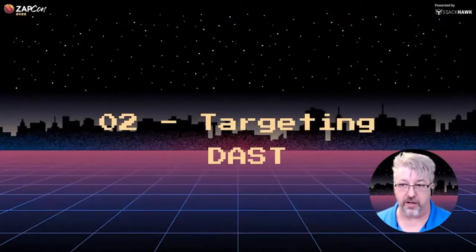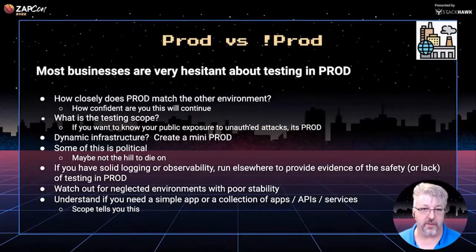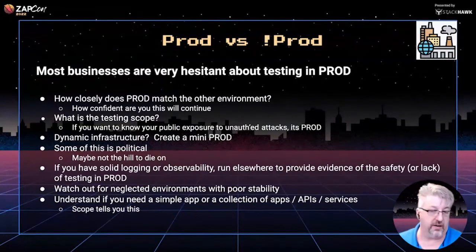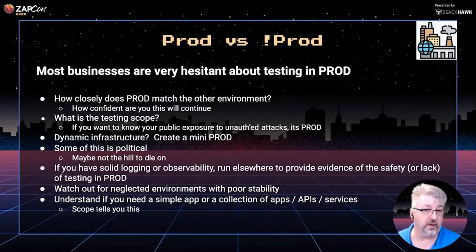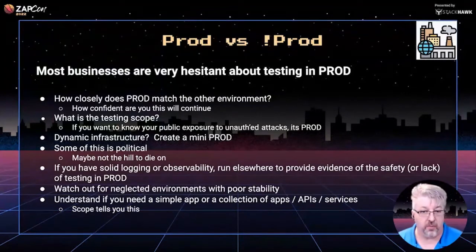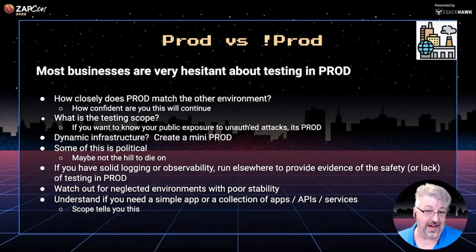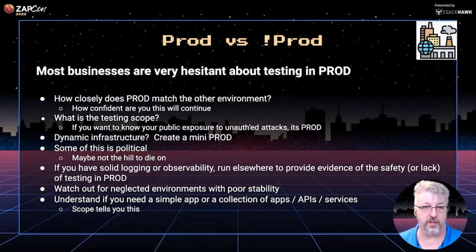Let's talk about targeting DAST. This is the traditional bugaboo of DAST scanning — prod versus not prod, and the scary spookiness of testing prod. The conundrum it leaves you with: fine, I can't test prod, but the thing I'm left testing — UAT, pre-prod, or testing — does it really match? And if your defined scope is to know your exposure from the public internet, well, it kind of has to be prod. Maybe it's an unauthenticated scan of prod, but it kind of has to be prod. These scope decisions can drive requirements for where you test.